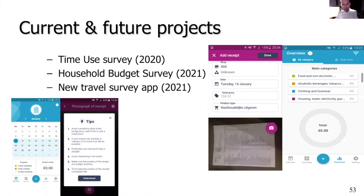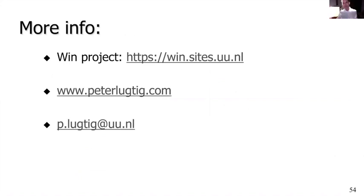Finally, where are we going? In September we will do a time use survey of the Netherlands — also a diary-based study — and we will use a smartphone app to study how people spend their time. Next year we have two more projects: a budget survey, and a new version of the travel app survey where we will improve the app and then deploy it for real from next year on. Thank you all for listening — feel free to drop me an email or visit my personal website or the WIN project website for more information.